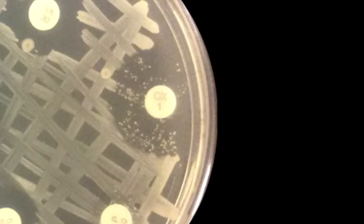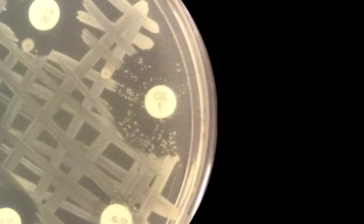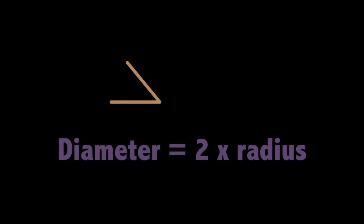Look at this disc. It's too close to the edge to measure the diameter. But can we still get accurate data for this antibiotic? Well, we can measure the radius, take the radius, and double it to get the diameter.